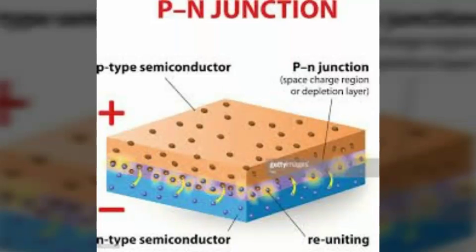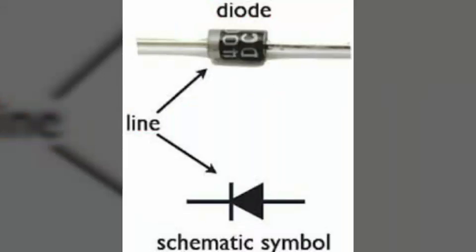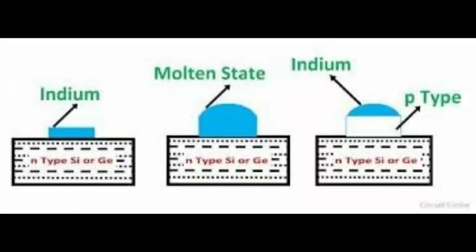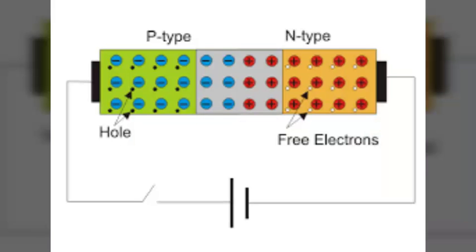Now next is the P-N junction. When a P-type semiconductor is suitably joined to an N-type semiconductor, the contact surface is called a P-N junction. It is the control element for semiconductor devices. One common method of making a P-N junction is called alloying.